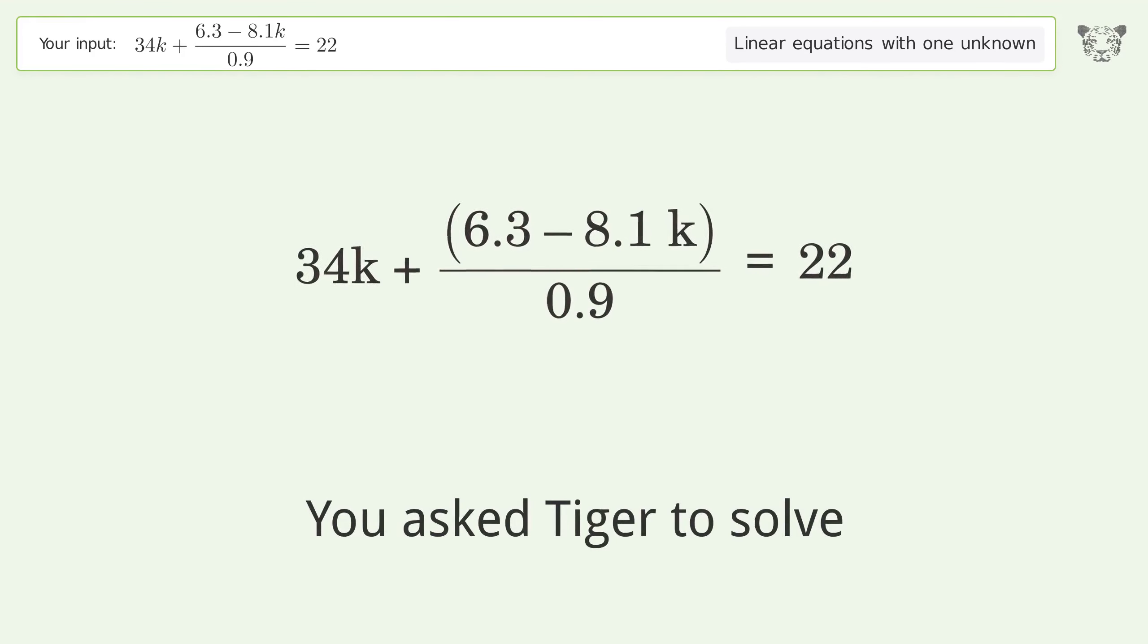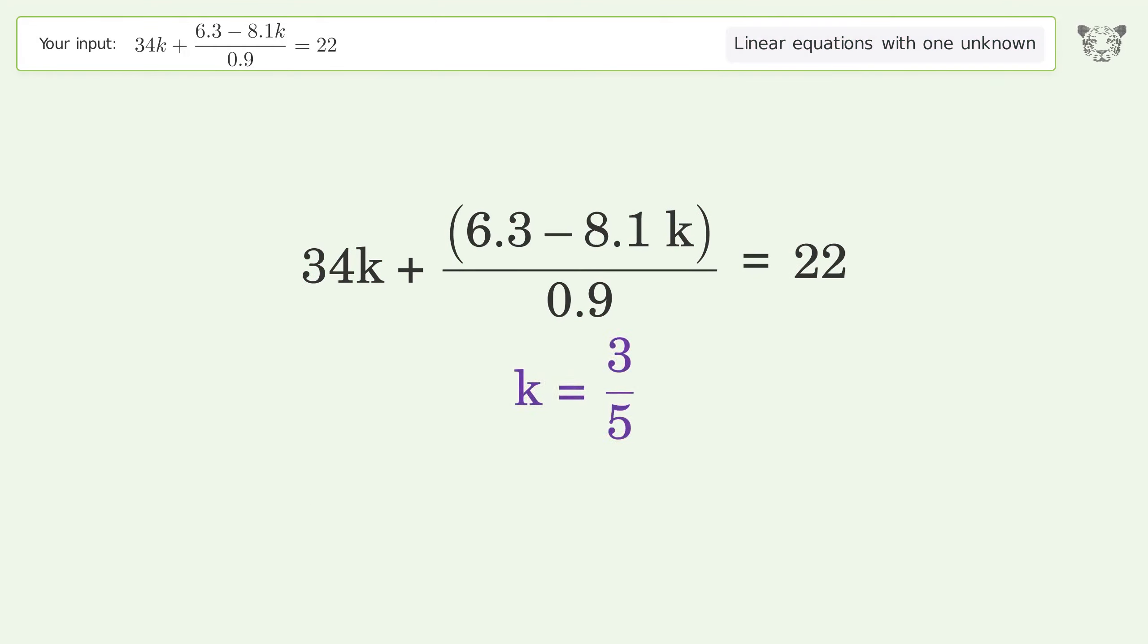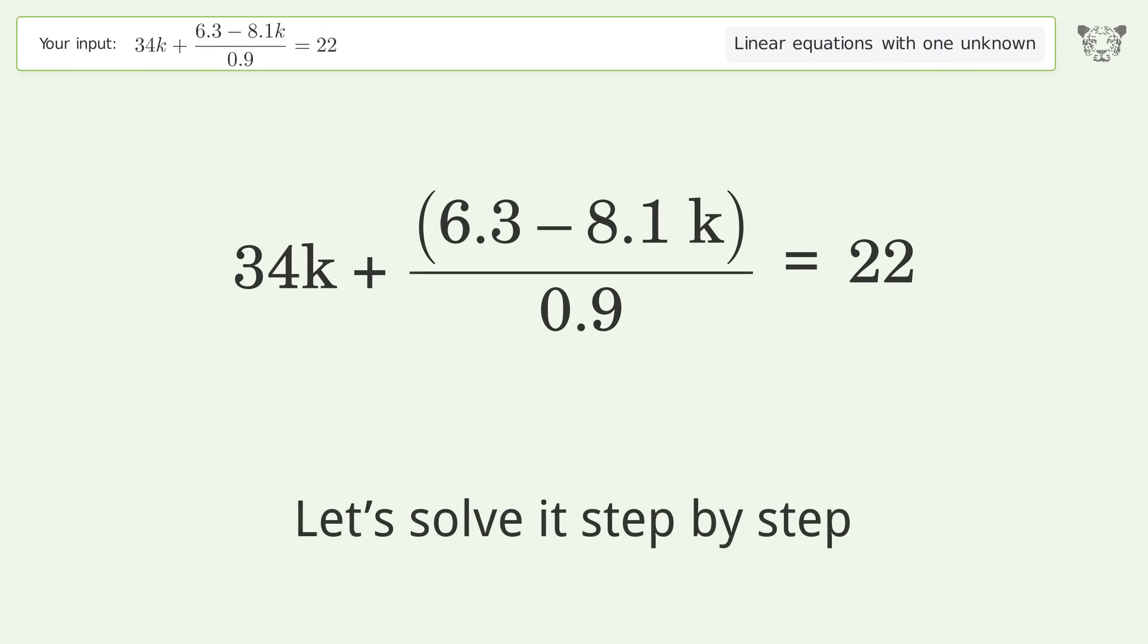You asked Tiger to solve this problem, which deals with linear equations with one unknown. The final result is k equals 3 over 5. Let's solve it step by step. Simplify the expression.